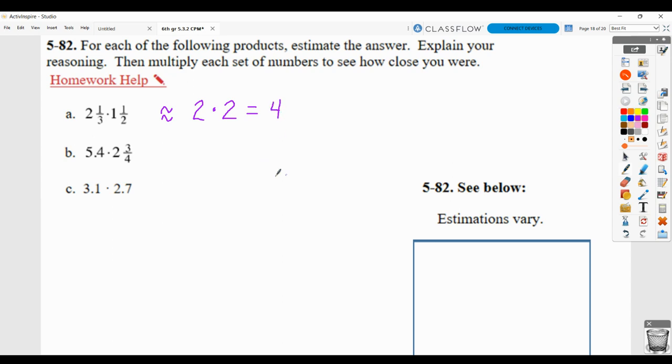Then I need to show my exact answer. So 2 and 1/3 times 1 and 1/2. 2 and 1/3 I would change to an improper fraction. 3 times 2 is 6, plus 1 is 7. So it would be 7 over 3. 1 and 1/2 I would change to an improper fraction. 2 times 1 plus 1 is 3, over the denominator of 2. You can multiply before you simplify, or simplify then multiply. I encourage you to simplify before you multiply. I think it's easier.